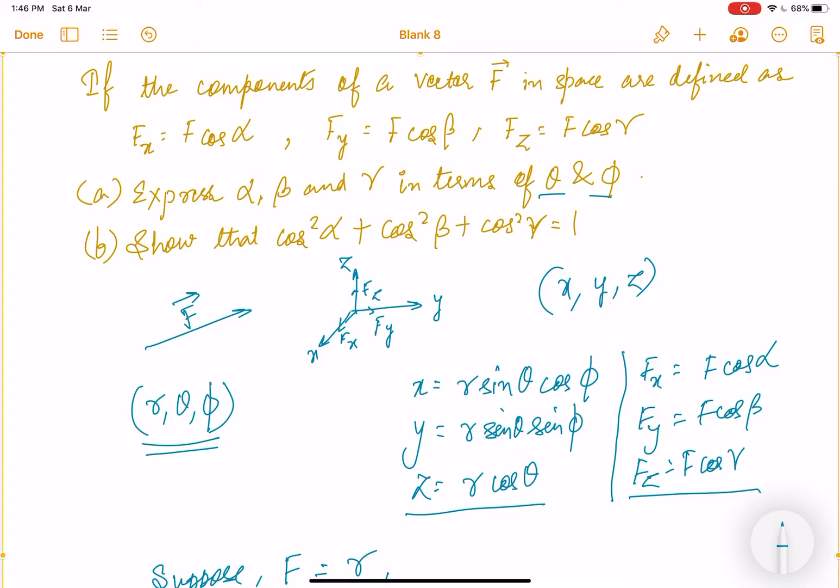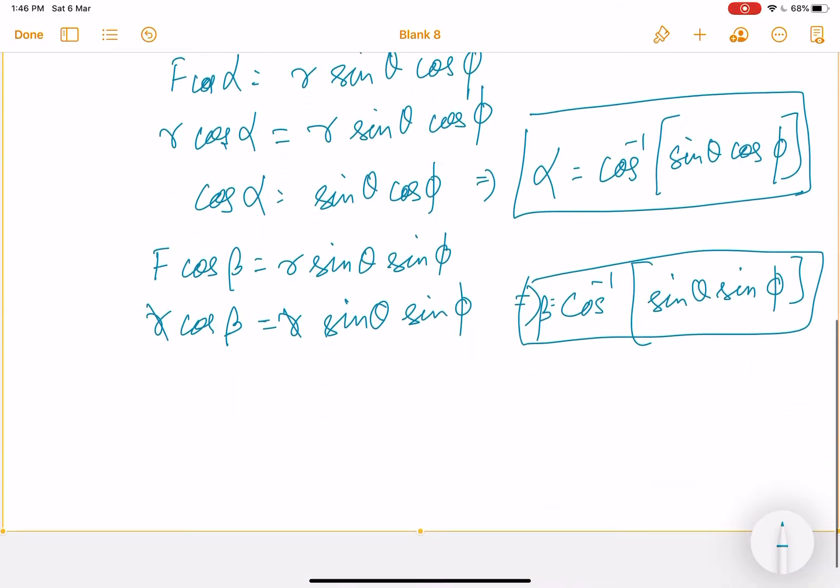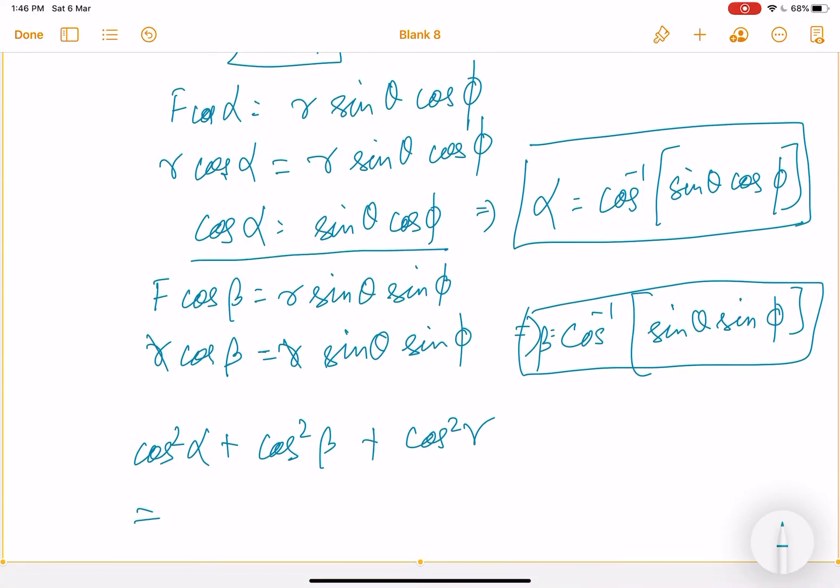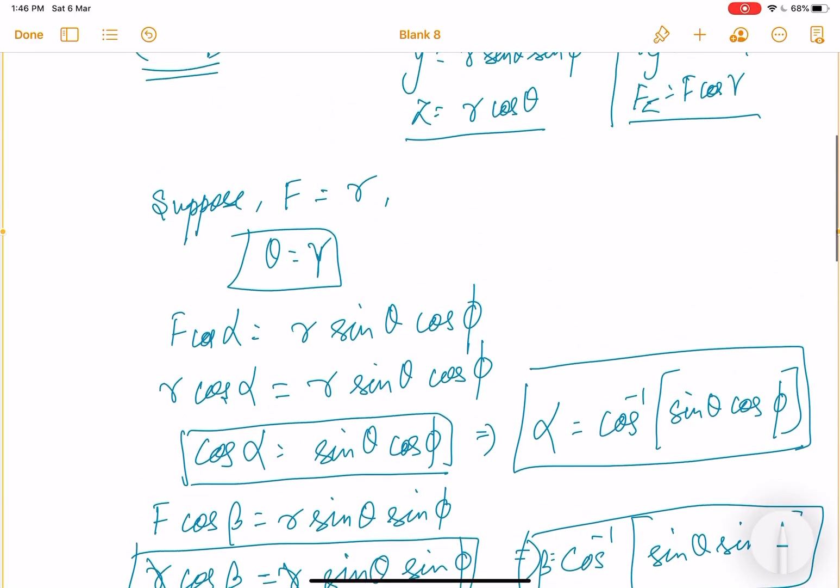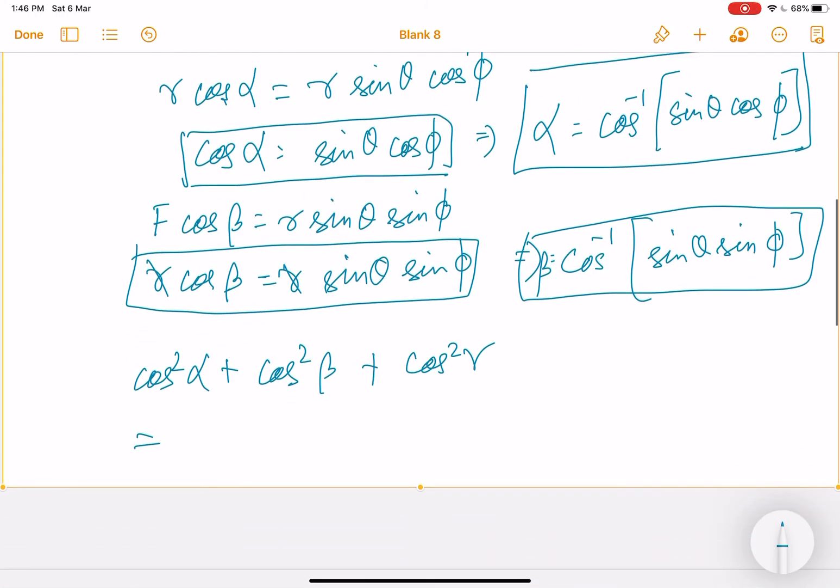Then, what does the next bit say? It says we have to prove this, that cos square alpha plus cos square beta plus cos square gamma is equal to 1. Now, since we have got everything, let me see. Cos alpha is over here and your cos beta is over here, and cos theta is equal to cos gamma. So let me just substitute the values.